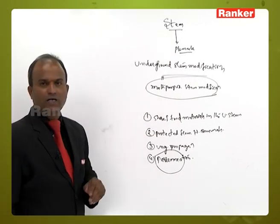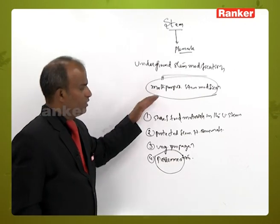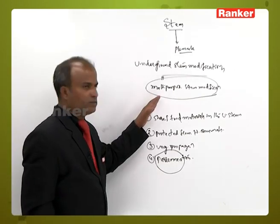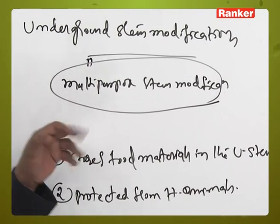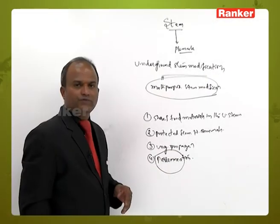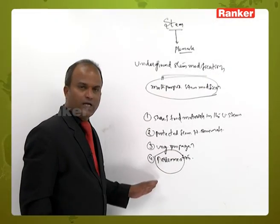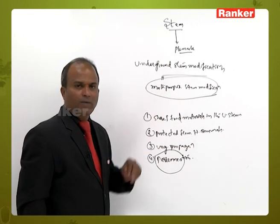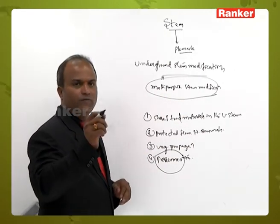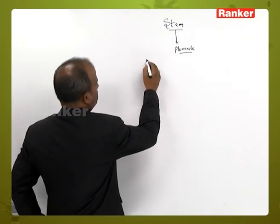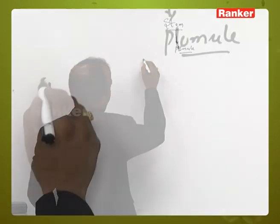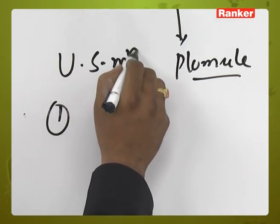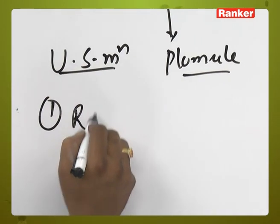This is about underground stems, which are multipurpose stem modifications because they are useful in many ways — these four functions. The first type of underground stem modification is the rhizome.